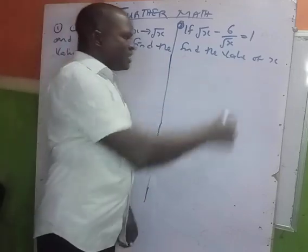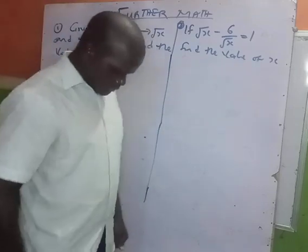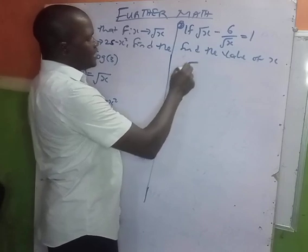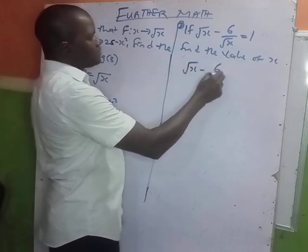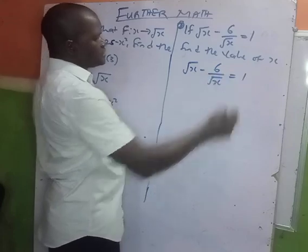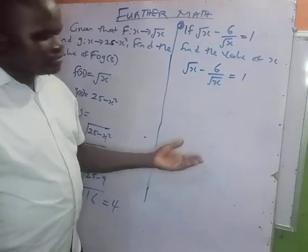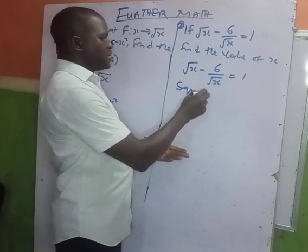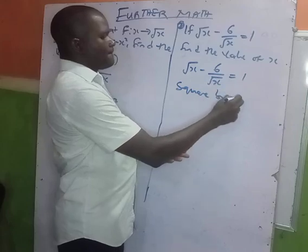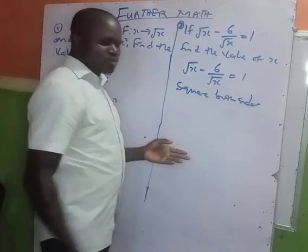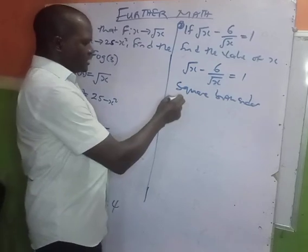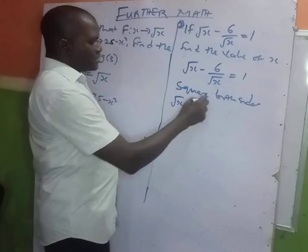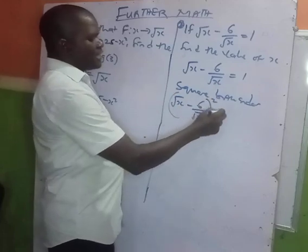Now look at this next part. You have to find the value of x where (√x - 6) / √x = 1. What you're going to do is square both sides.